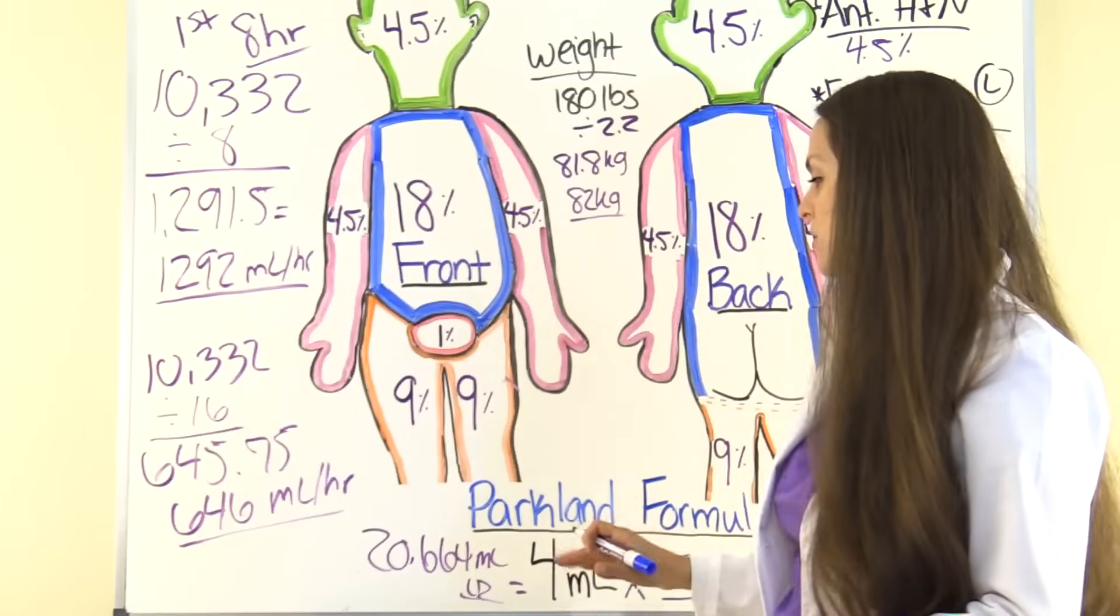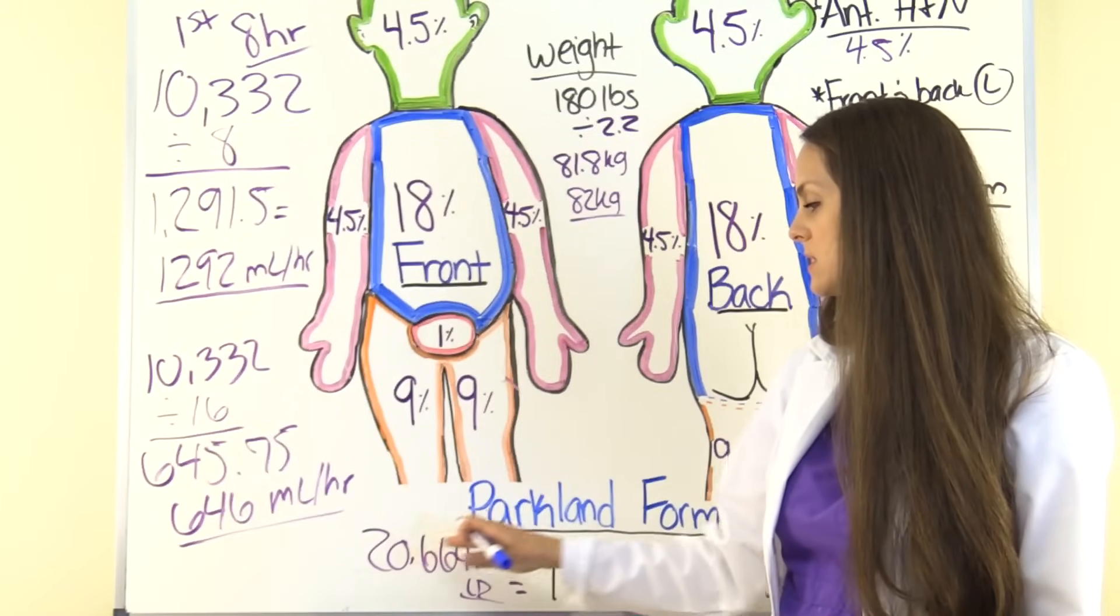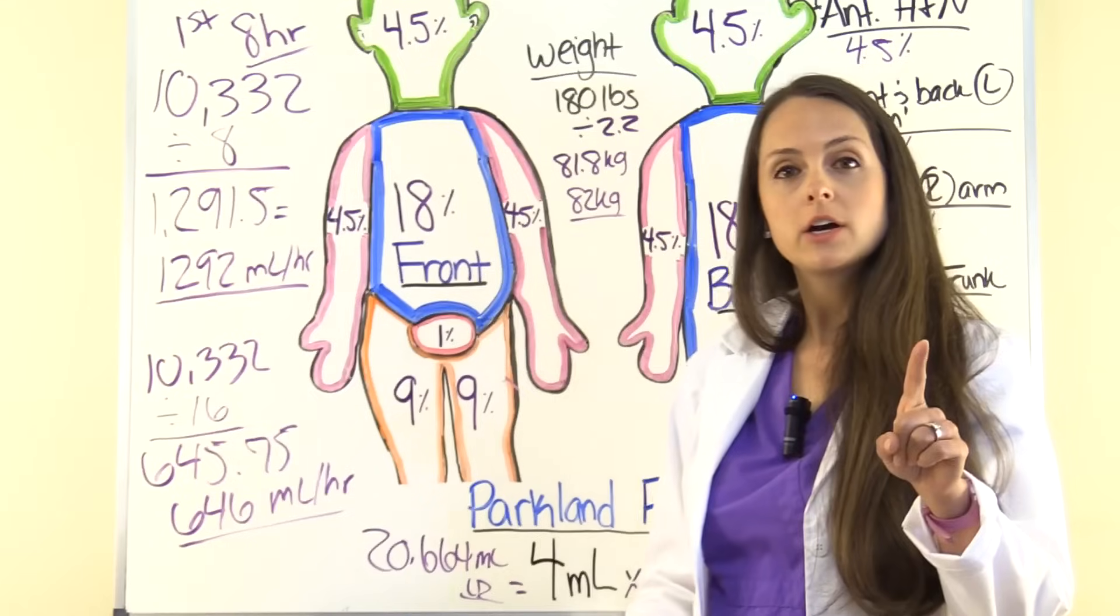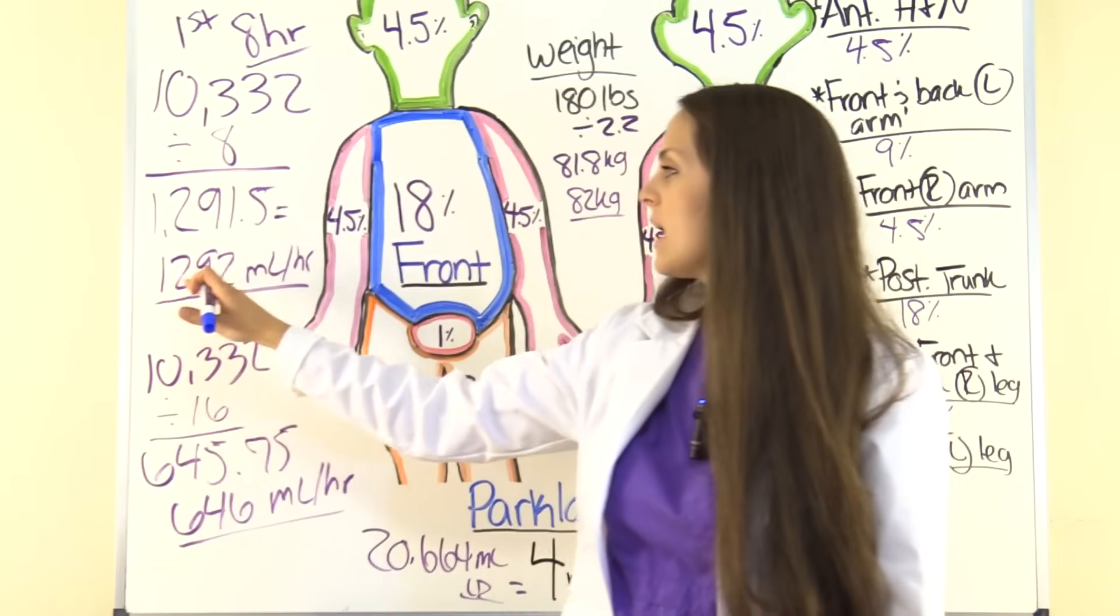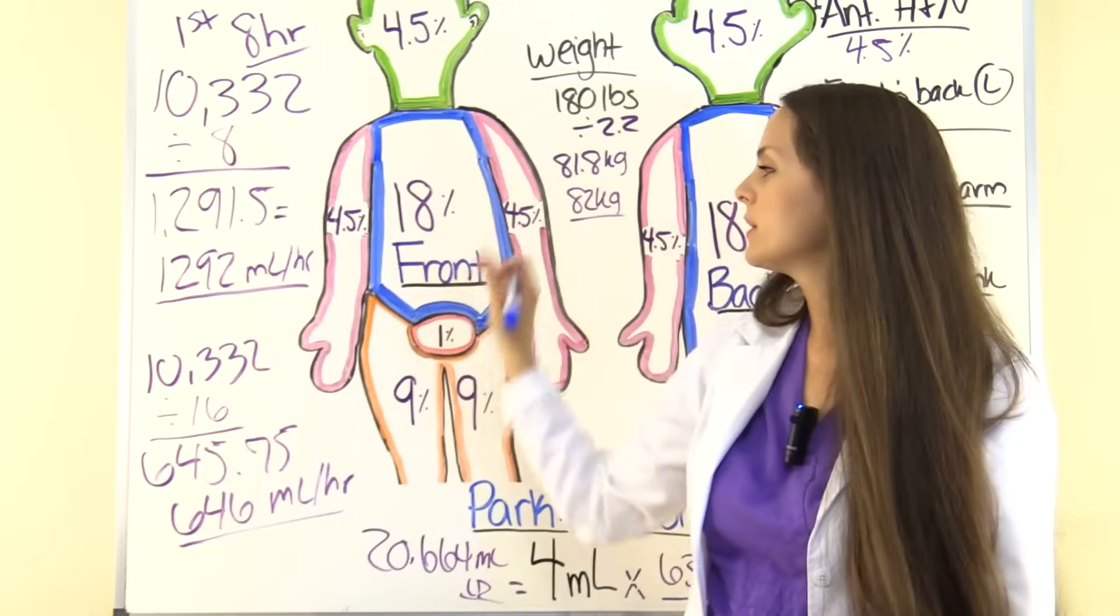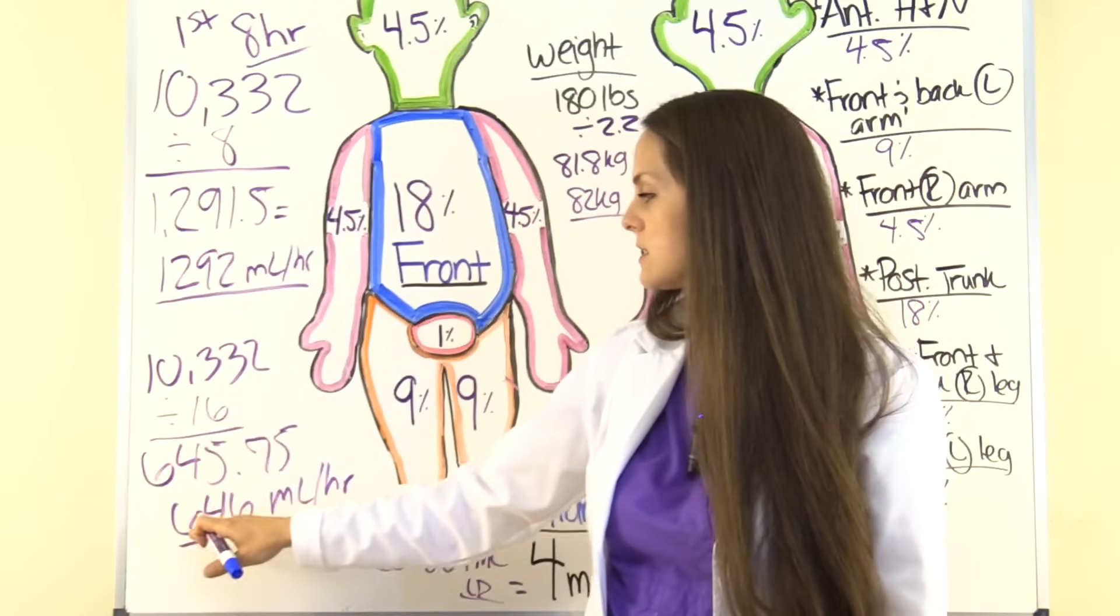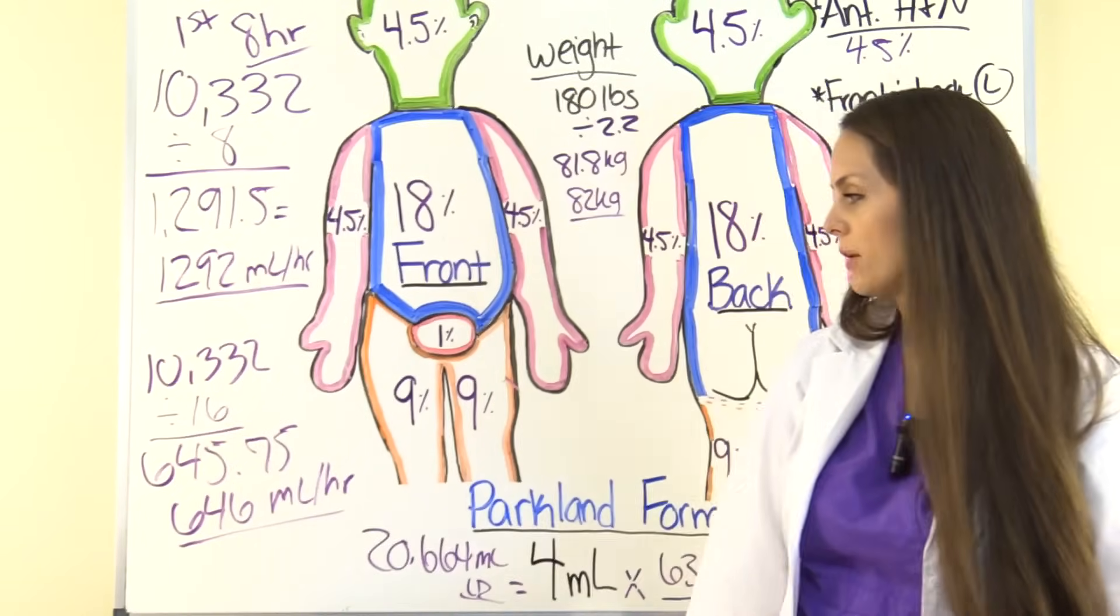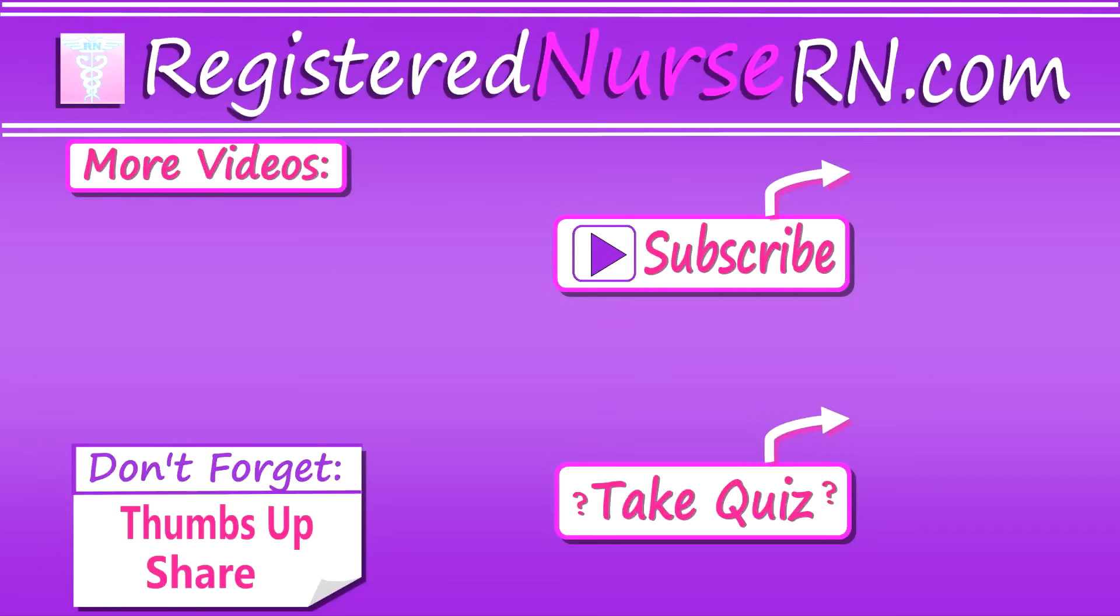So again, just to recap, our answer for the total volume that's going to go in over those 24 hours is 20,664 milliliters. But during the first 8 hours, we're going to infuse that at a rate at 1,292 milliliters per hour to give that first half. Then we're going to give the second half over 16 hours, and we're going to run that at a rate of 646 milliliters per hour. Okay, so that wraps up this review on the Parkland burn formula. Thank you so much for watching. Don't forget to take the free quiz and to subscribe to our channel for more videos.